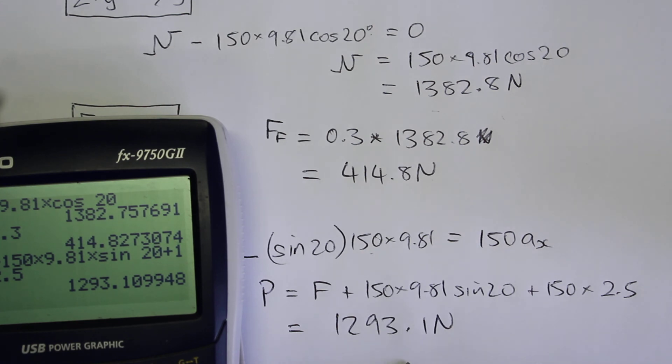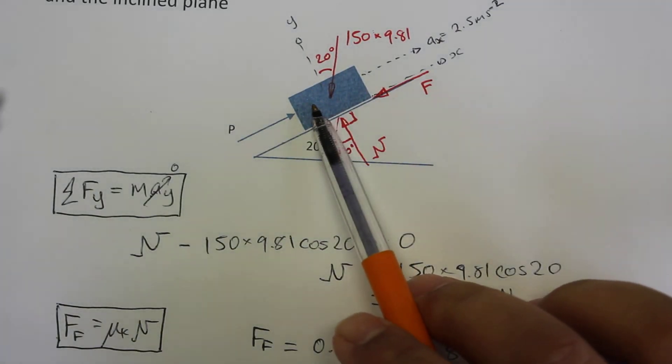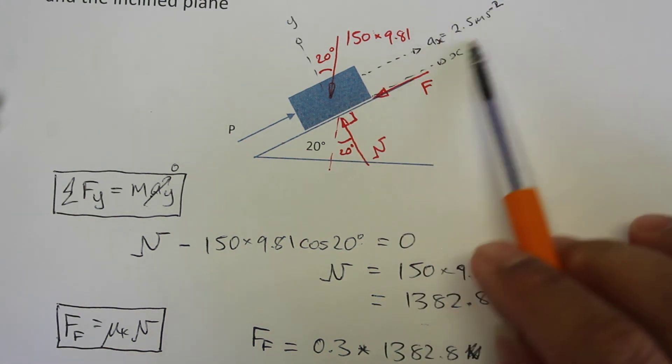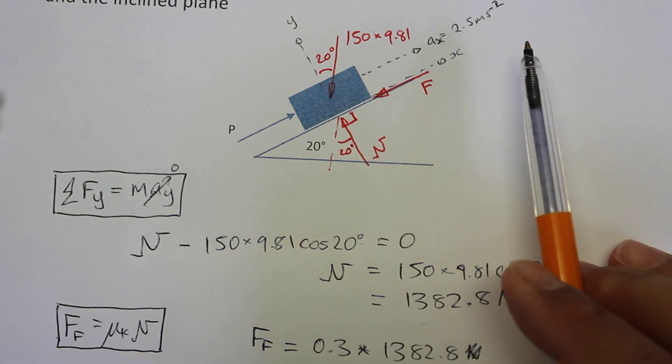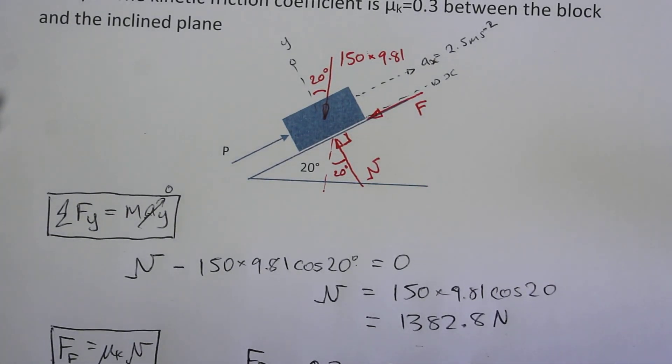So this is the force required to be pushed onto the block in order to make this block move up the incline with an acceleration of 2.5 meters per second. Thanks for watching. Hope this has been helpful for you. And I'll see you soon.